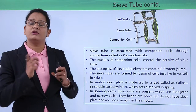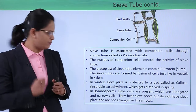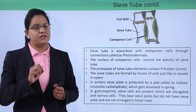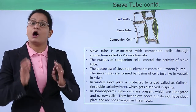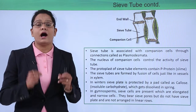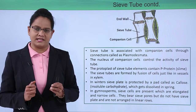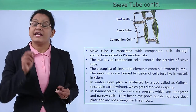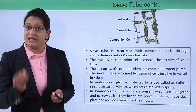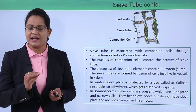In winters, the sieve plate gets clogged by an insoluble carbohydrate known as callose, which gets dissolved again in spring. In case of gymnosperms, sieve cells are present instead of sieve tubes. Sieve cells are narrow and elongated — not tube-like. In them, sieve areas and sieve plates are not present; they just have simple pores.